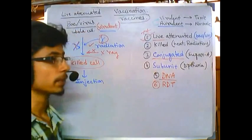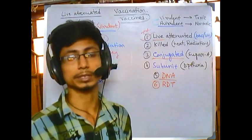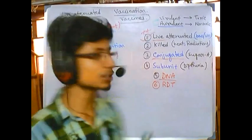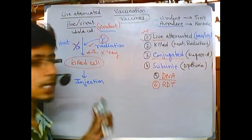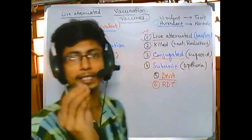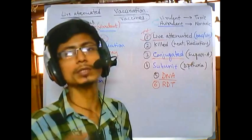Remember, bacterial cells never take part actively during the immune response. Immune response is a response from our side, not from the bacteria side. If we inject the part of the bacteria which is foreign, which is toxic, then the immune response will be there.